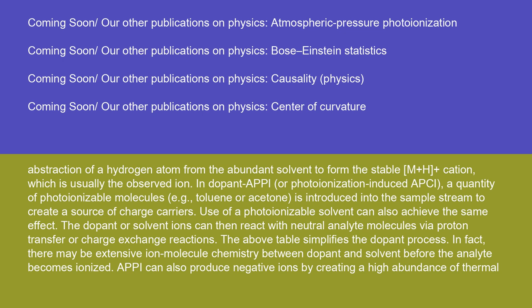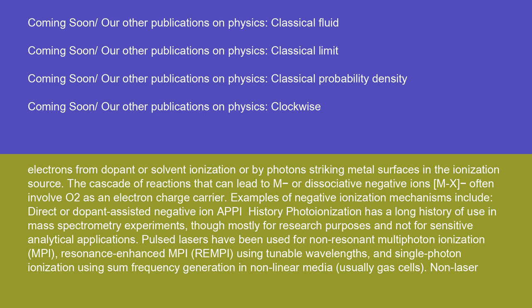In dopant-assisted APPI, a quantity of photoionizable molecules, e.g., toluene or acetone, is introduced into the sample stream to create a source of charge carriers. Use of a photoionizable solvent can also achieve the same effect. The dopant or solvent ions then react with neutral analyte molecules via proton transfer or charge exchange reactions. In fact, there may be extensive ion-molecule chemistry between dopant and solvent before the analyte becomes ionized. APPI can also produce negative ions by creating a high abundance of thermal electrons from dopant or solvent ionization, or by photons striking metal surfaces in the ionization source. The cascade of reactions leading to M−• or dissociative negative ions MX− often involve O2 as an electron charge carrier.